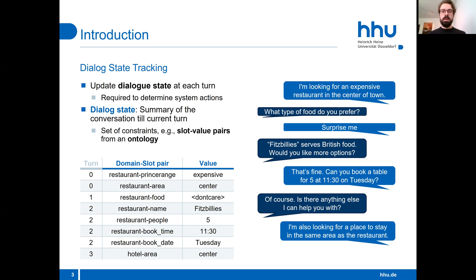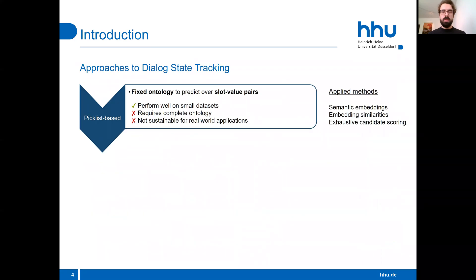Tracking the dialogue state is essential for the system to pick its next action. Domains, slots, values, and actions are usually defined by an ontology, and traditionally, ontologies were fixed and prediction was performed over all slot-value pairs.